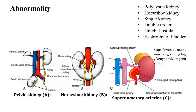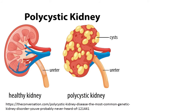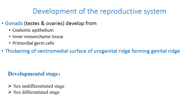During the development of the urinary system there may be different anomalies, such as pelvic kidney, horseshoe kidney, supernumerary arteries, double ureters, and others. For example, on this picture you can compare a polycystic kidney with a healthy kidney.